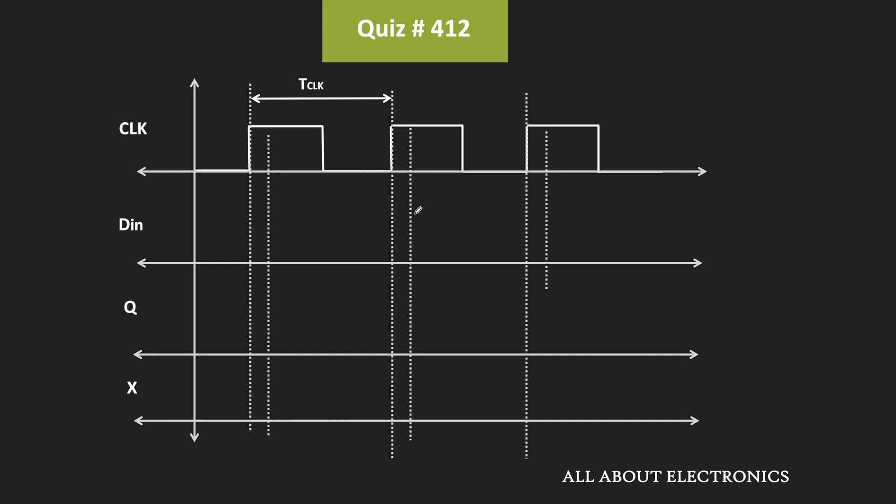We are assuming that initially the data signal is equal to 0, and at every clock duration it is seeing a transition. As per the question, this data signal is 15% delayed with respect to the clock signal. Considering this, let us find the output of the D flip-flop. Since it is a positive edge-triggered flip-flop, it will follow the input signal at every clock transition, and this is how the output of the flip-flop will look.